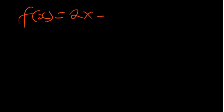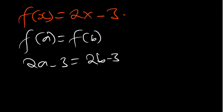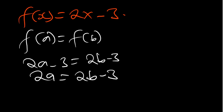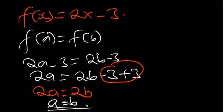Another example: f(x) = 2x - 3. Is this function one-to-one? A function is one-to-one if f(a) = f(b), so 2a - 3 = 2b - 3. Shifting -3 to the right: 2a = 2b - 3 + 3, those give zero, so 2a = 2b. Dividing both sides by 2, a = b. Therefore this function is one-to-one.